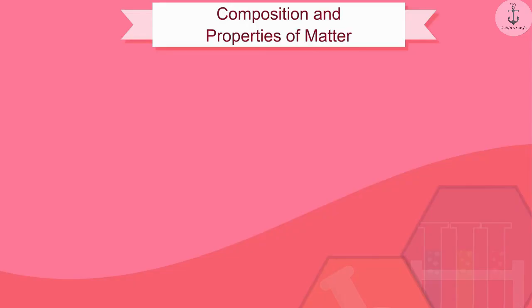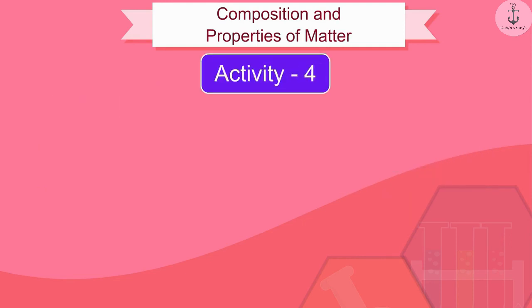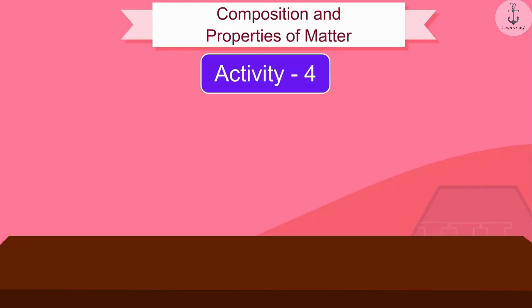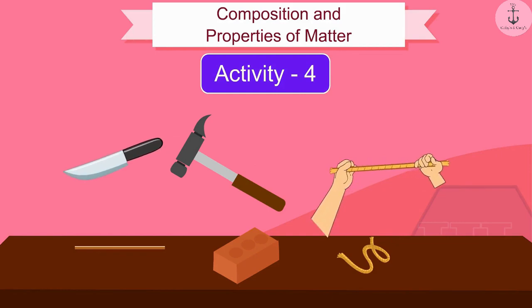Let us now discuss the last characteristic feature of particles. We will also try to understand it through an activity. Take a copper wire, a piece of brick, and a rope. Try to make them brittle by hammering, cutting, or pulling them.